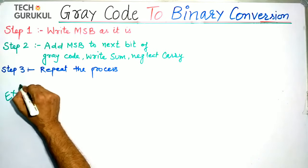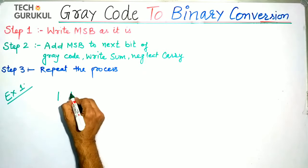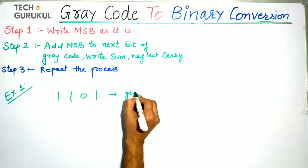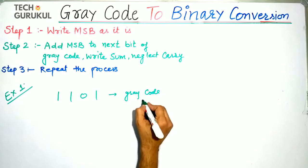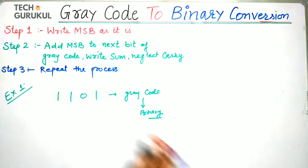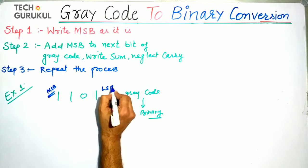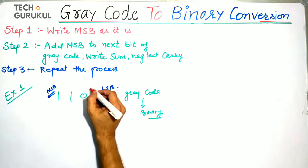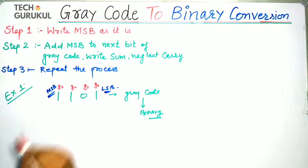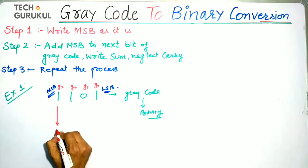Let us see Example 1: convert gray code 1, 1, 0, 1 into binary. This is the gray code. We label the bits G0, G1, G2, G3, where G3 is the MSB and G0 is the LSB. The first step is to write the MSB as it is — that is 1.